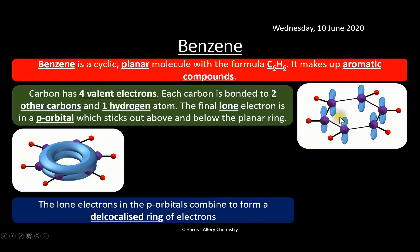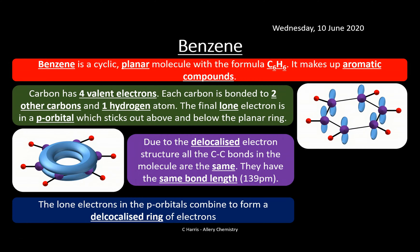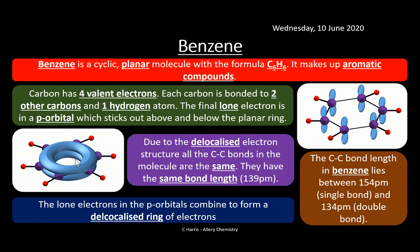The lone electrons in the p-orbitals combine to form a delocalized ring of electrons, forming the classic donut shape of benzene. Due to this delocalized electron structure, all carbon-carbon bonds in the molecule are the same length — about 139 picometres. This gives benzene unique stability. The bond length lies between 154 pm (single bond) and 134 pm (double bond), so it exists somewhere between the two.